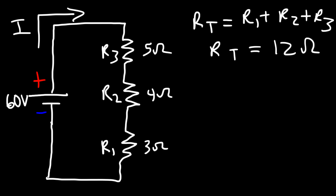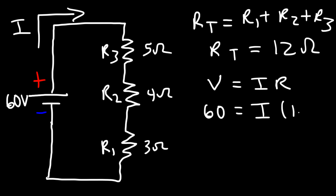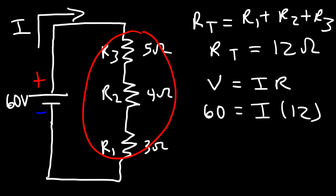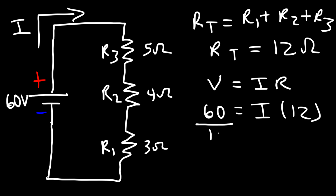Next, you need to calculate the current. So we could use the formula V is equal to IR. The voltage is 60 — that's the voltage across the three resistors. We're looking for the current, and the total resistance is 12. You can treat this as if it's one big resistor with a 60-volt battery source across a 12-ohm resistor. So we divide both sides by 12 to get the current by itself. 60 divided by 12 is 5, so we have a current of 5 amps flowing in this circuit.